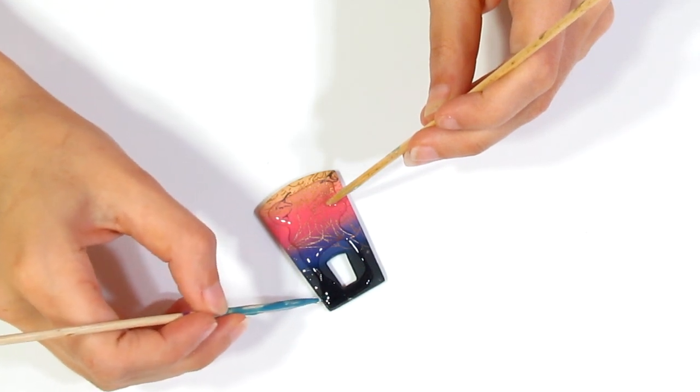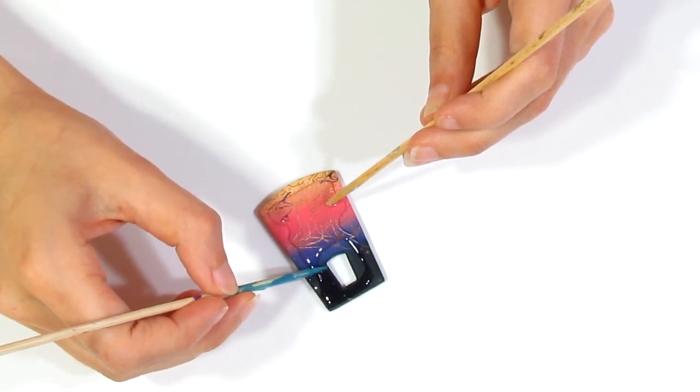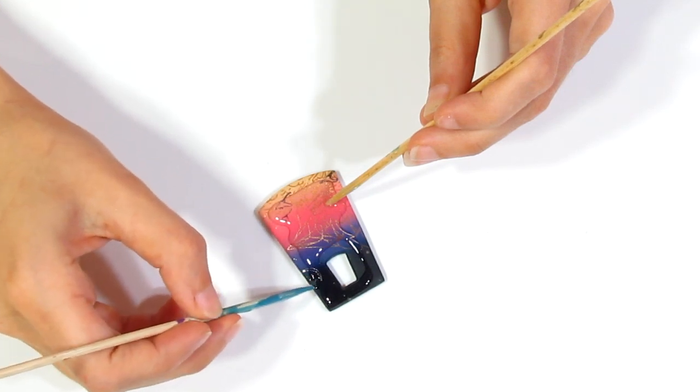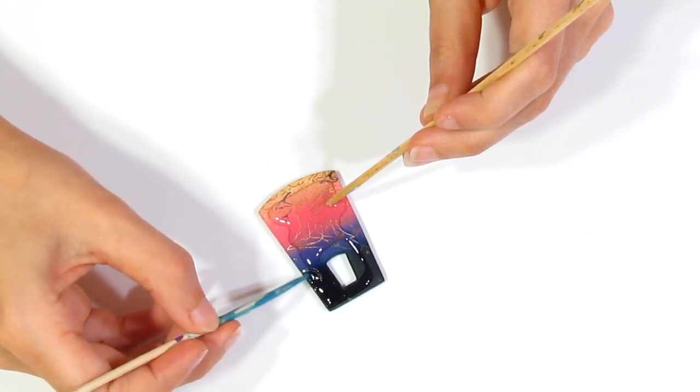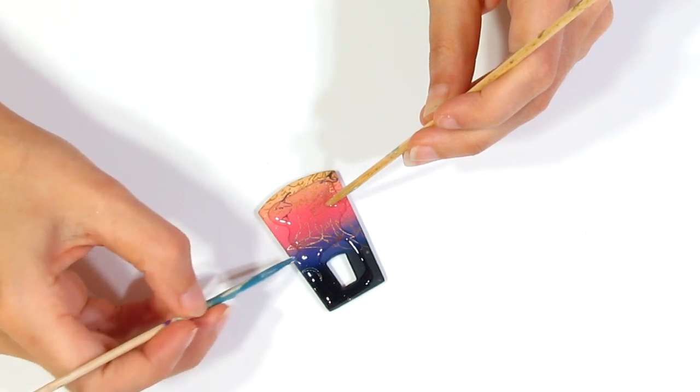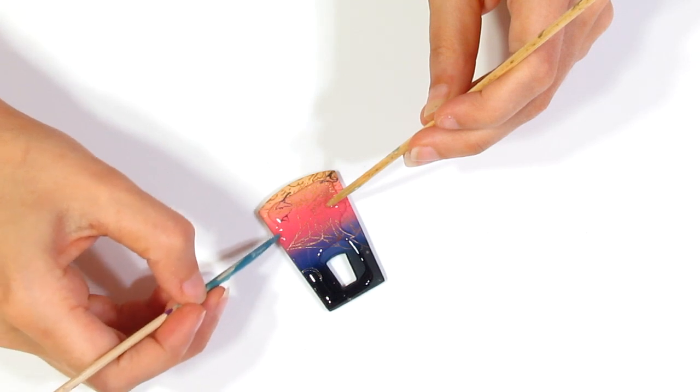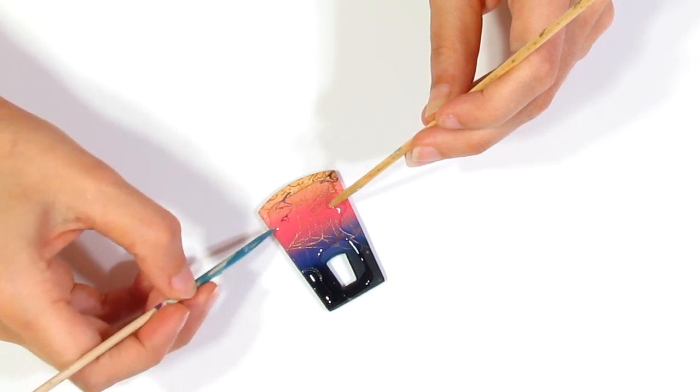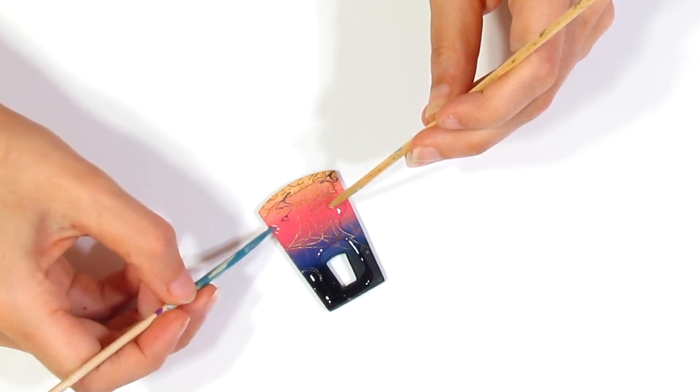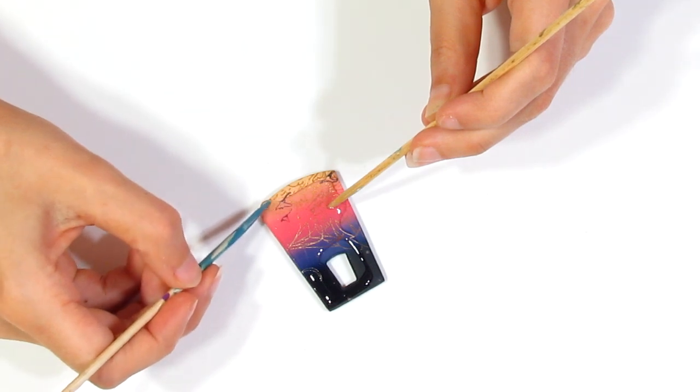And then because we burnished the mica powders on, you shouldn't have to worry about them moving or causing any issues while you're trying to spread the resin around. So then you'll spread the resin all around. Once that is finished, you'll put it in the UV light for at least 15 minutes just to get that resin rock hard. And that will basically be pretty much it.